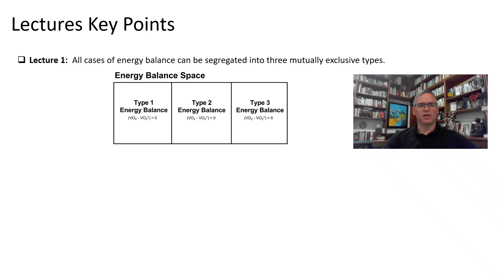In lecture one, we learned that by defining the VO2 deviation, it is possible to divide all cases of energy balance into three mutually exclusive categories. Type one energy balance where the average VO2 deviation is negative, type two energy balance where the average VO2 deviation is zero, and type three energy balance where the average VO2 deviation is positive.